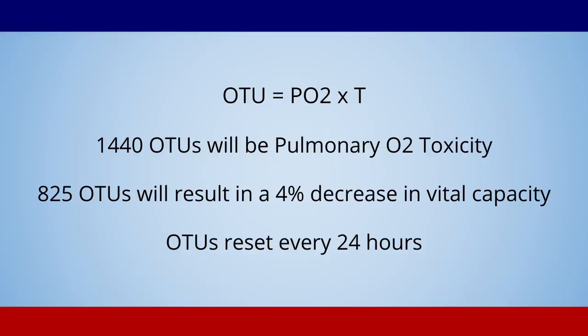And then pulmonary oxygen toxicity — well, that we can calculate. We know that 1,440 units in a given 24-hour period would be pulmonary oxygen toxicity, and 825 units still decreases vital capacity by up to 4%. So to keep patients as safe as possible, we keep them below 825 units per 24 hours. The clock resets every 24 hours, so each day we start that process over. Our standard treatments in clinic are typically between 100–125 to maybe 300 units in any given day, keeping patients very far from either type of oxygen toxicity.